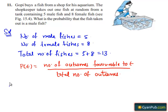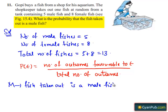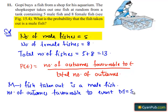Let M be the event that the fish taken out is a male fish. Number of outcomes favorable to event M equals the number of male fishes in the tank which is 5. Total number of outcomes equals the total number of fishes in the tank which is 13.